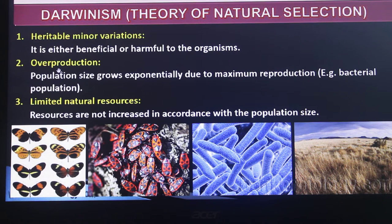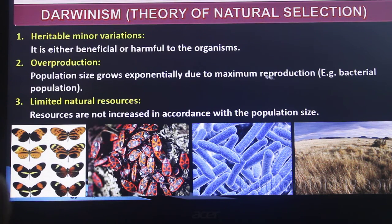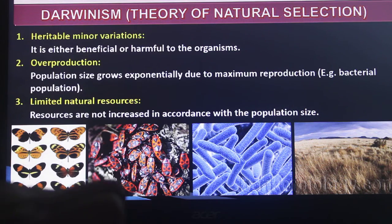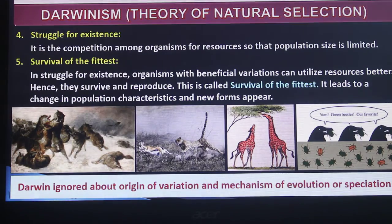Another point is overproduction: population size grows exponentially due to maximum reproduction. The third point is limited natural resources — resources are not increased in accordance with the population.